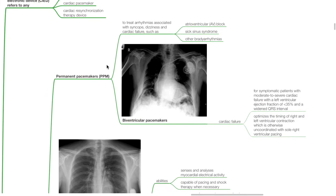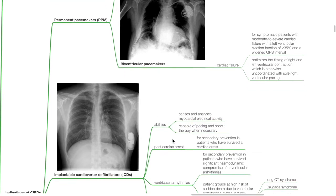For biventricular pacemakers, these are used for symptomatic patients with moderate to severe cardiac failure with a left ventricular ejection fraction of less than 35% and a widened QRS interval. These pacemakers optimize the timing of right and left ventricular contraction, which is otherwise uncoordinated with sole right ventricular pacing.